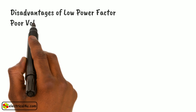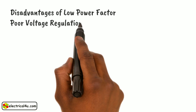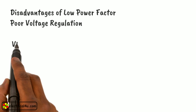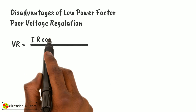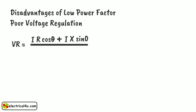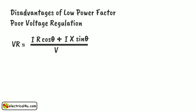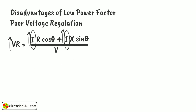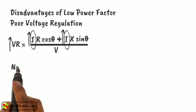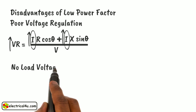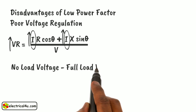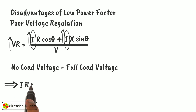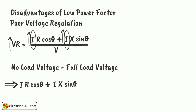The fourth point is poor voltage regulation. The general expression of voltage regulation at lagging power factor is: (I·R·cos θ + I·X·cos θ) divided by V. Here, I is the current through the circuit and V is the full load voltage. From the above expression, it is clear that if I is increased, the voltage regulation is increased. That means the difference between no load and full load voltage of the system is increased. This causes reduced voltage available at the terminal of the equipment, which is not desired for performance of the equipment.